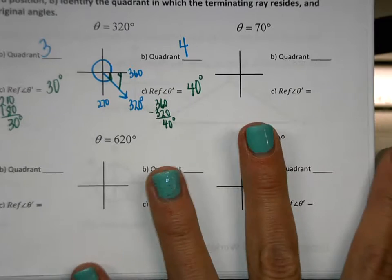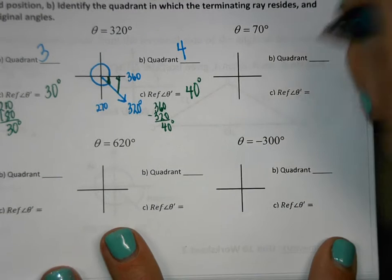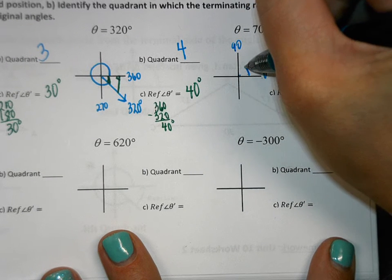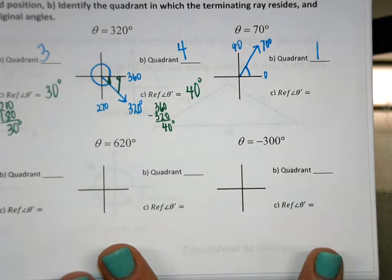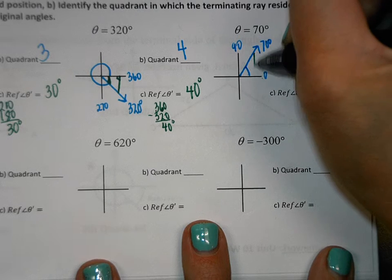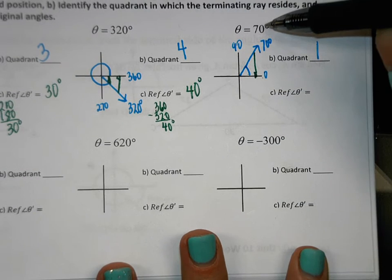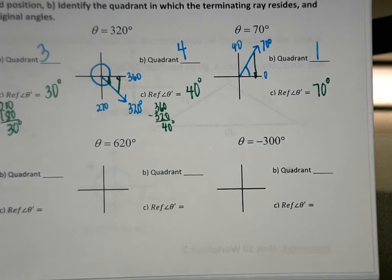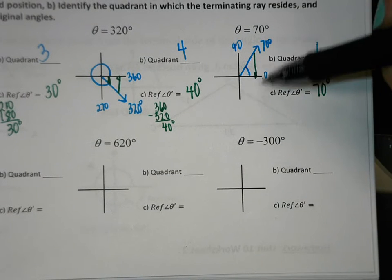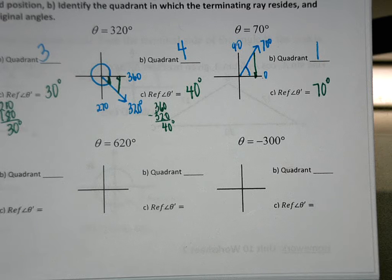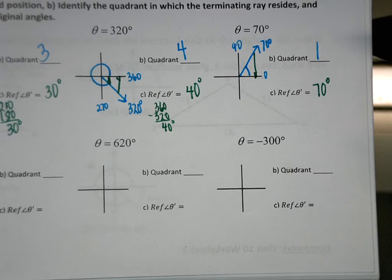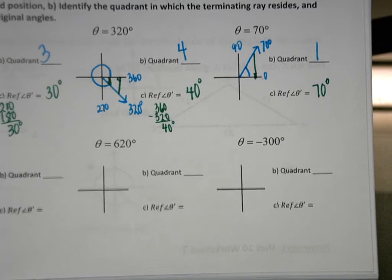70 degrees — this is in quadrant 1, because 70 is between 0 and 90. When drawing it, it just goes halfway in there. The reference angle goes down to the x-axis. It happens that the reference angle and the angle in standard position are the same — both 70 degrees. That will always happen in quadrant 1: the reference angle and the angle in standard position will always be the same, unless it's greater than 360.